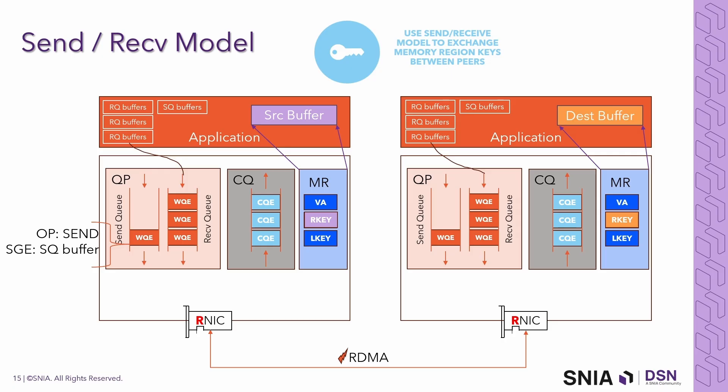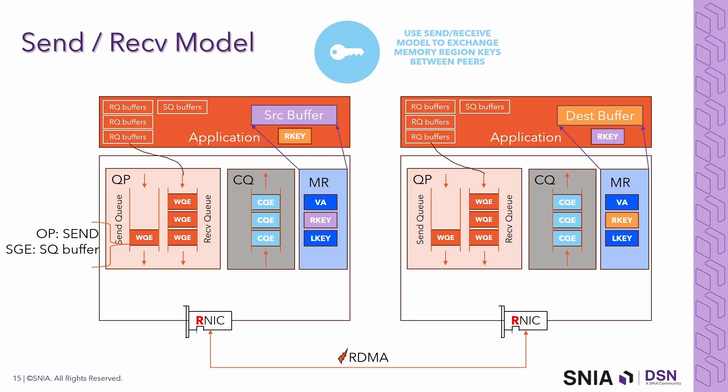The application packs the R-key into a send operation and delivers the request to the RNIC using a WQE — a work queue element on the queue pair. This results in the send operation being delivered on the wire. Once the send operation reaches the other side, the destination RNIC processes the operation, places it in a pre-posted buffer, and notifies the application by writing a CQE — a completion queue entry — on the application's CQ. The application on each side then stores the R-key and uses it for RDMA memory operations.